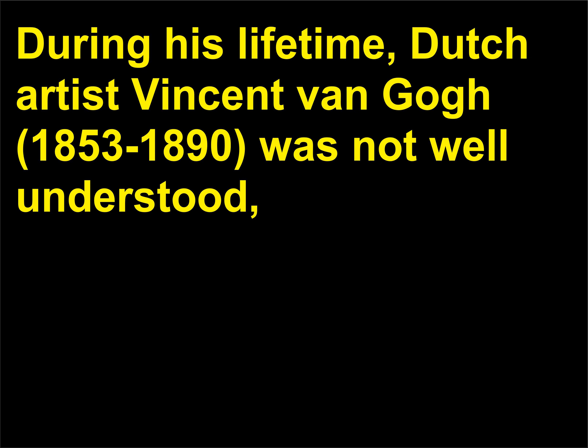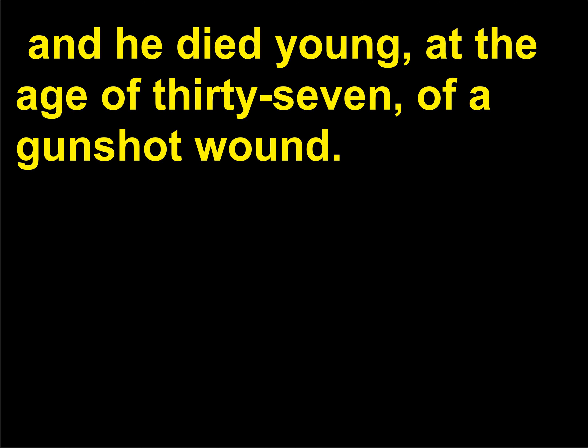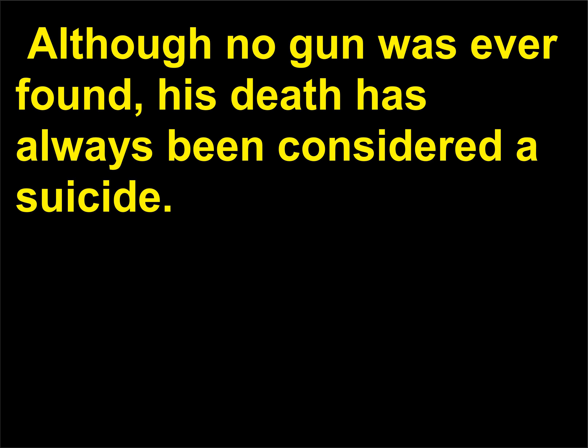Who was Vincent van Gogh? During his lifetime, Dutch artist Vincent van Gogh (1853–1890) was not well understood. He died young, at the age of 37, of a gunshot wound. Although no gun was ever found, his death has always been considered a suicide.